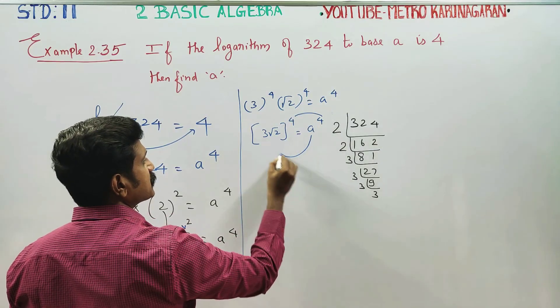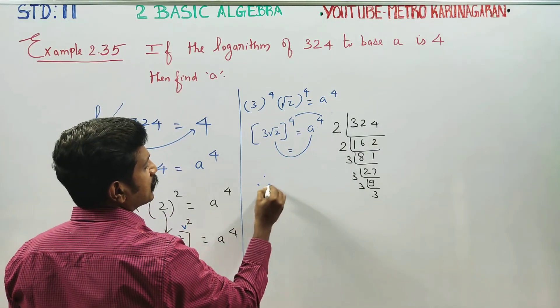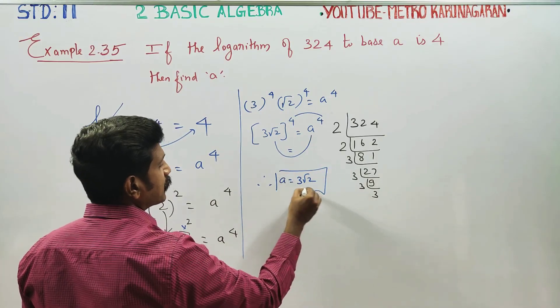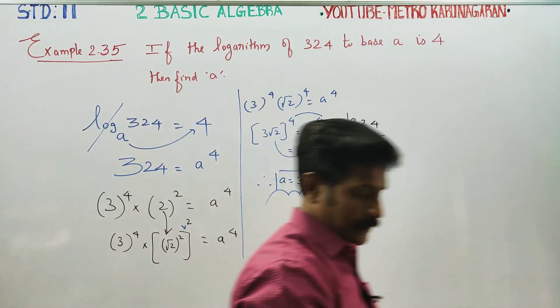When powers are equal, bases are equal. On the concept layer, A is equal to 3 root 2 will be your final answer. Okay, thank you.